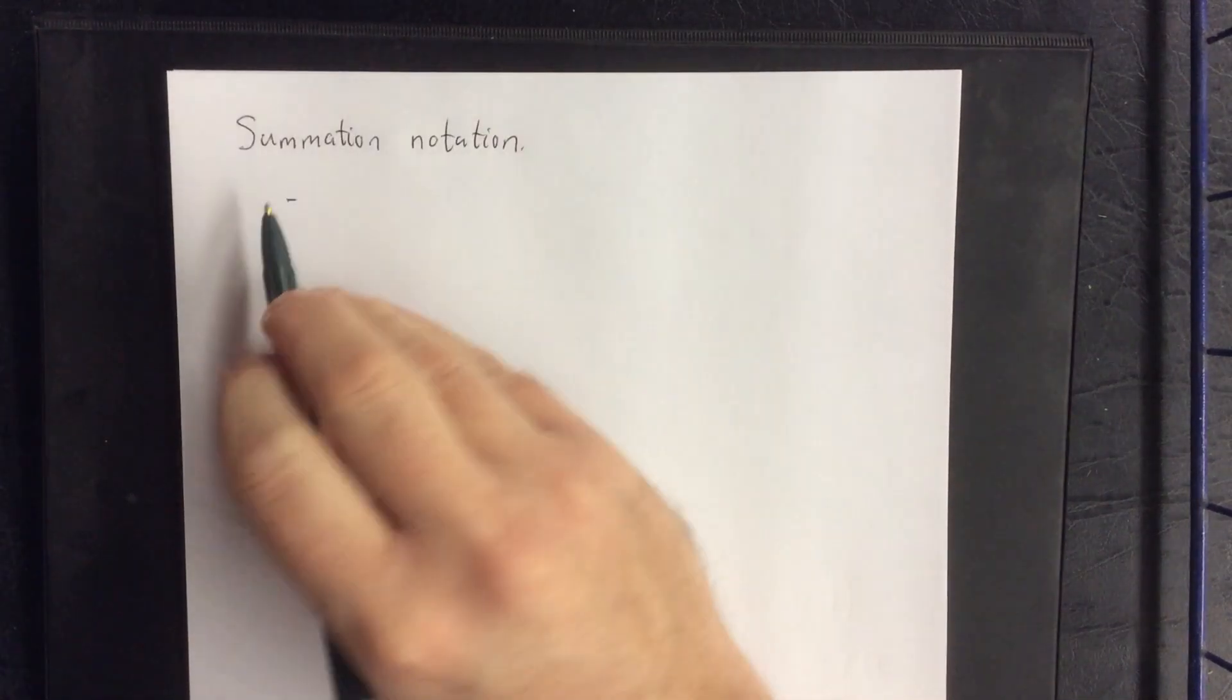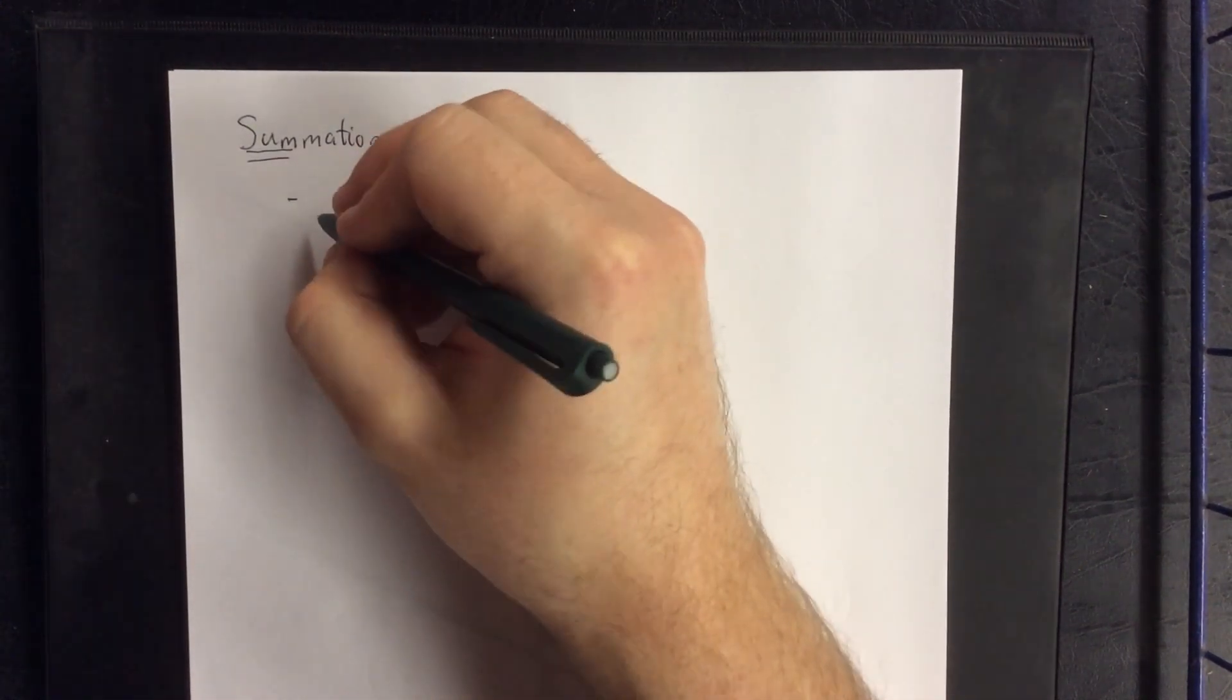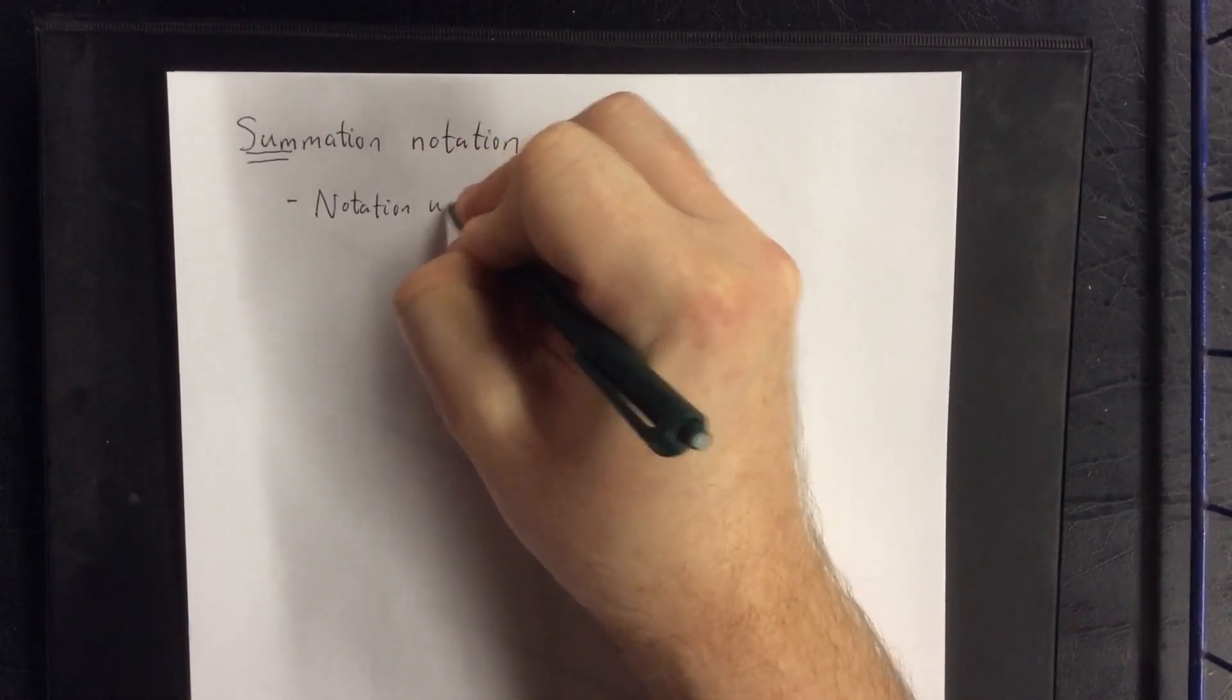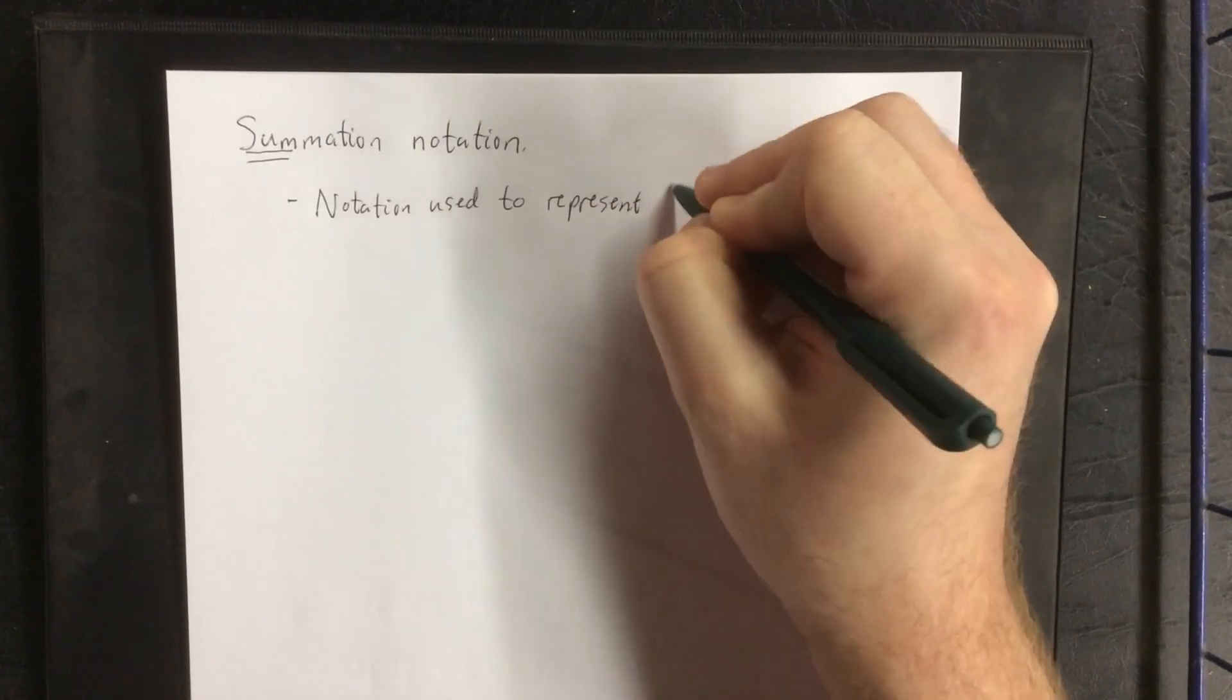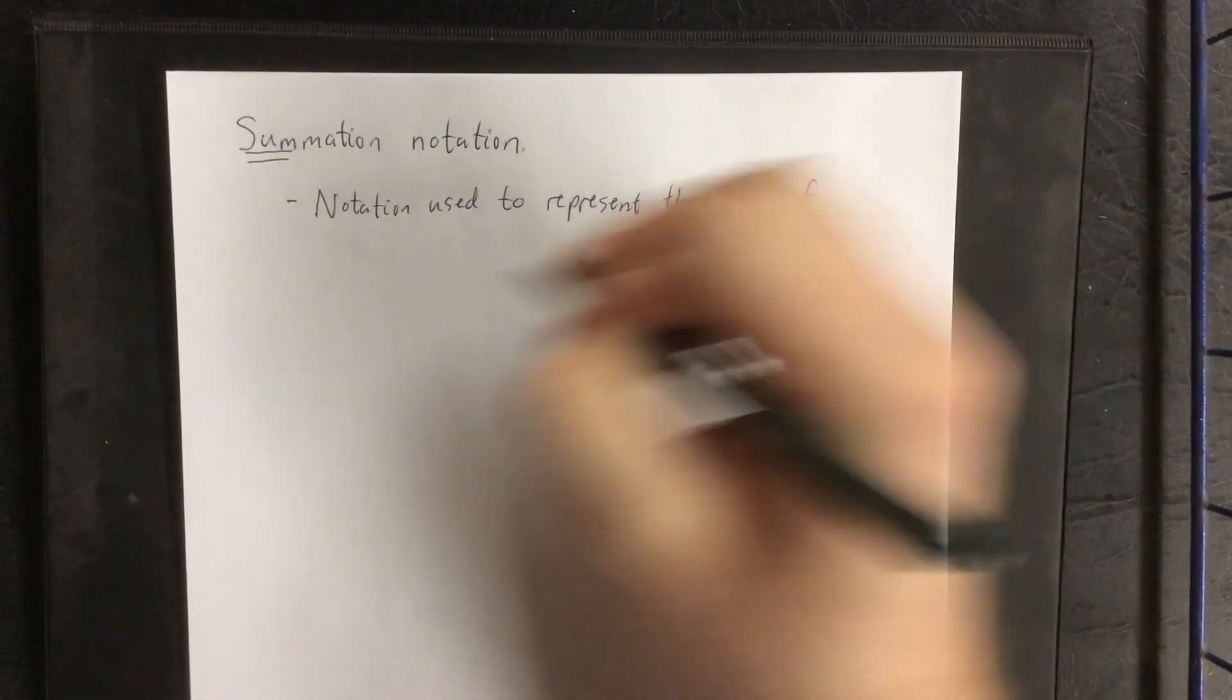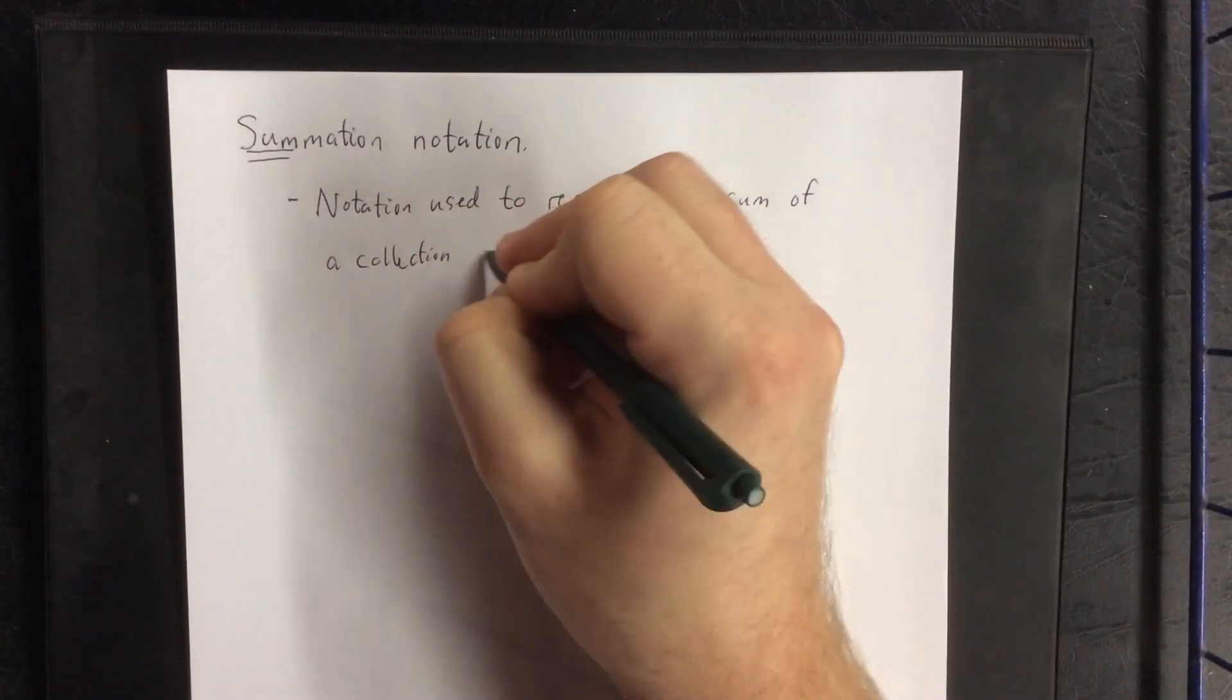In this video we are going to investigate what is known as summation notation. A summation, as the name indicates, is when you are taking the sum of many objects. This is the notation used to represent the sum of a collection of numbers.